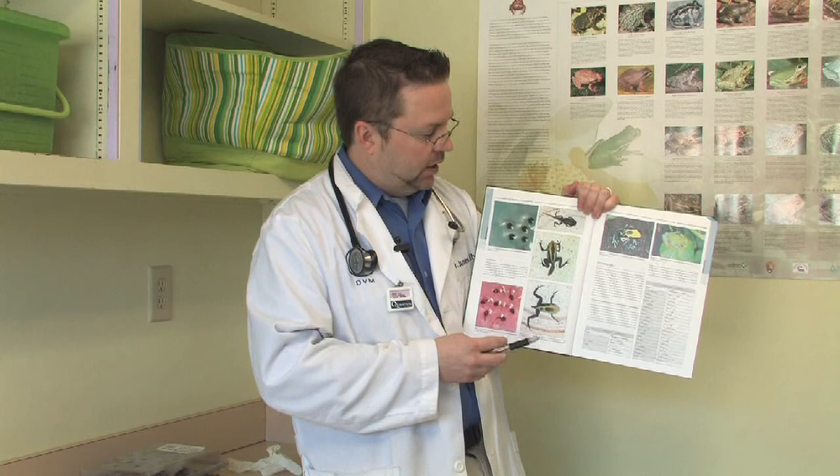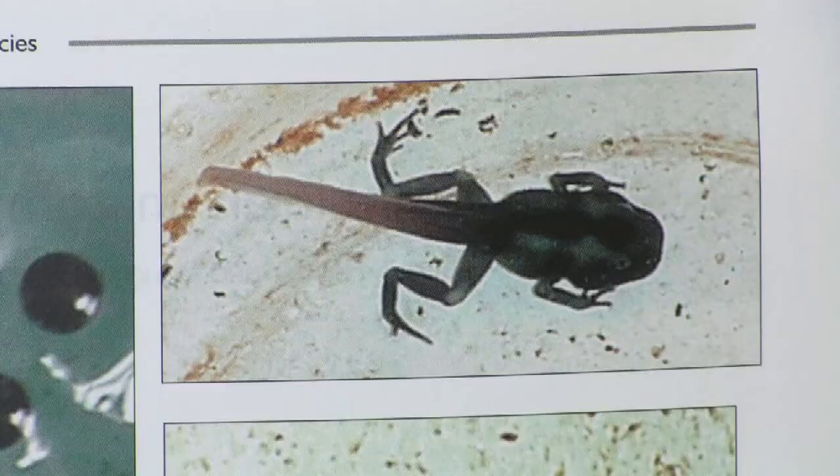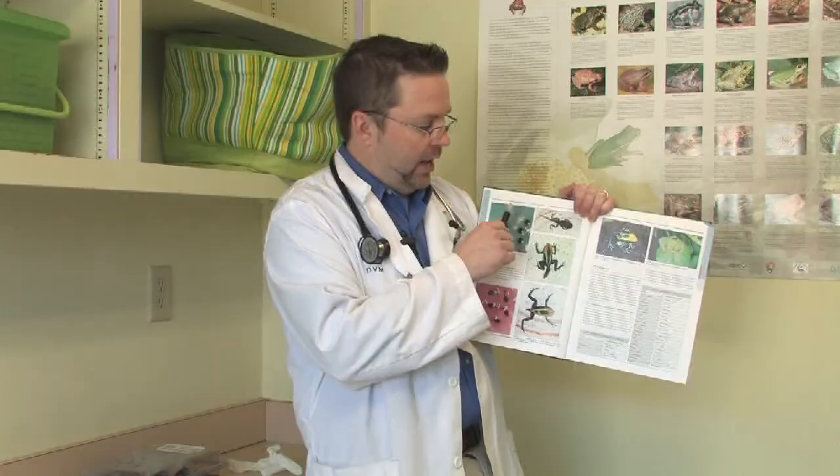The next step in the frog life cycle is to develop front legs. When that occurs, that's when they start generally resorbing the tail. During that time, depending on the species, as the tail is being absorbed, the rear legs then develop.